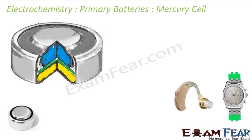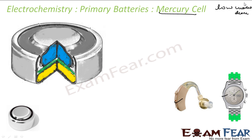The next type of cell is the mercury cell. These are very small in size and are used in devices like hearing aids, watches, and sometimes toys. They are very small cells designed for very low current devices.